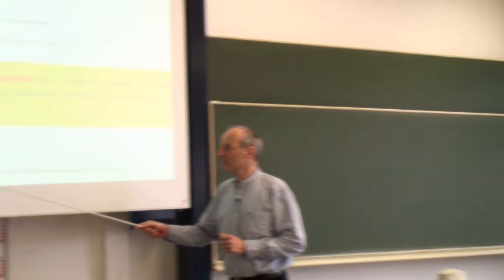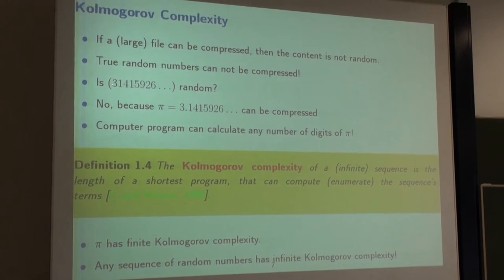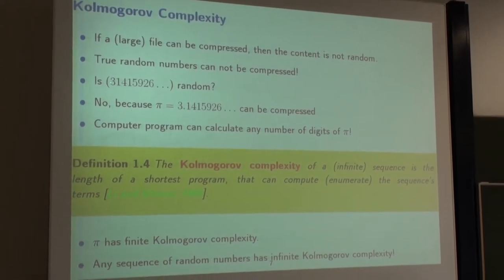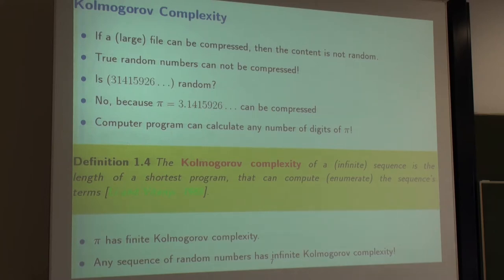So Kolmogorov complexity is a way of infinite compression of infinitely long sequences. Any sequence of random numbers has infinite Kolmogorov complexity. But what is not true is the other direction: if you have a sequence with infinite Kolmogorov complexity, you cannot conclude that this sequence is purely random.